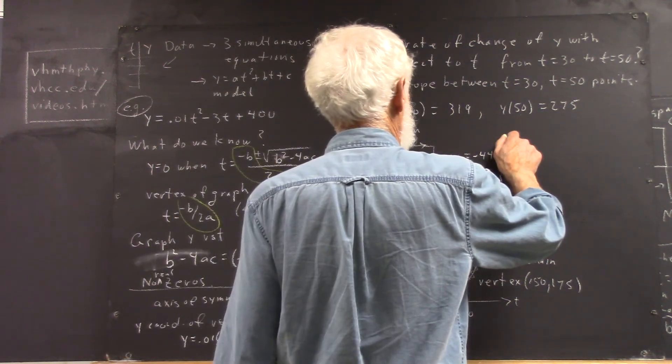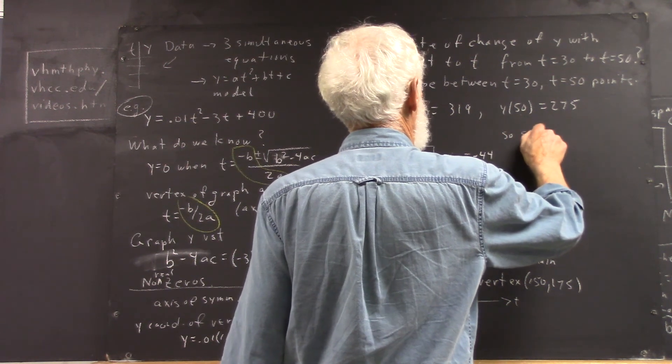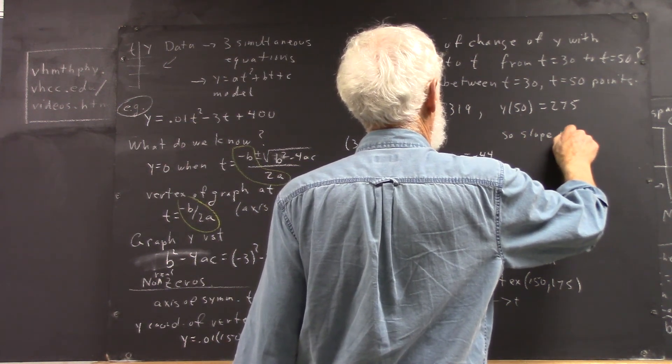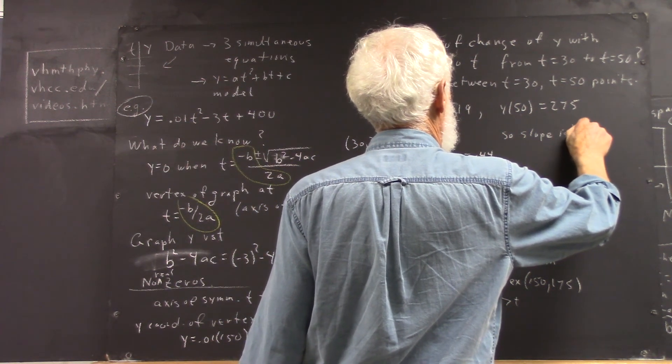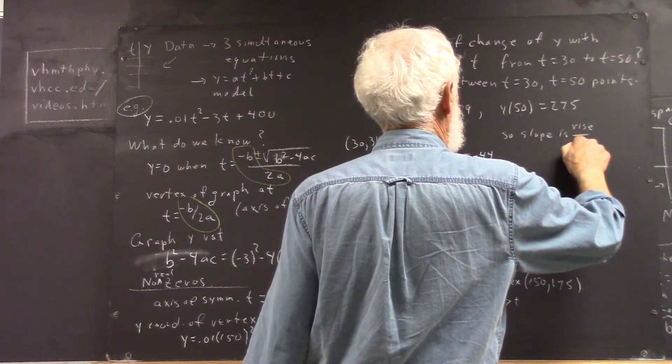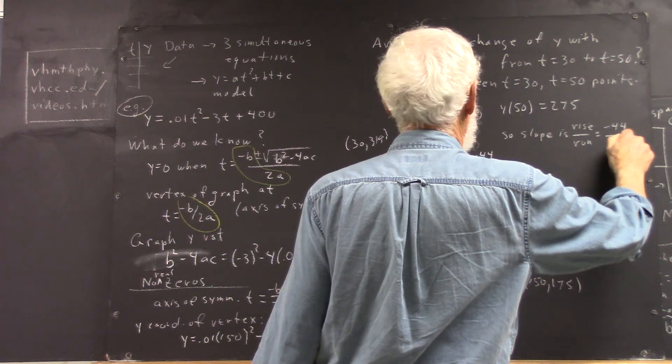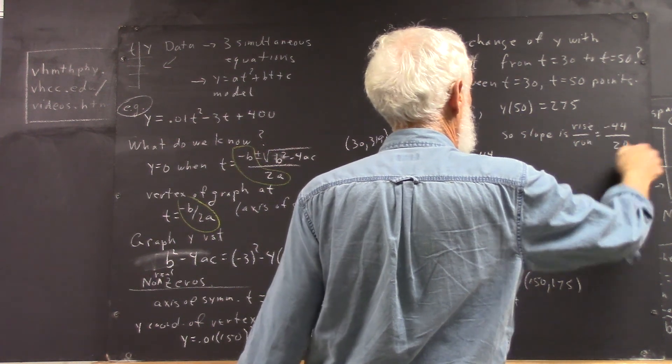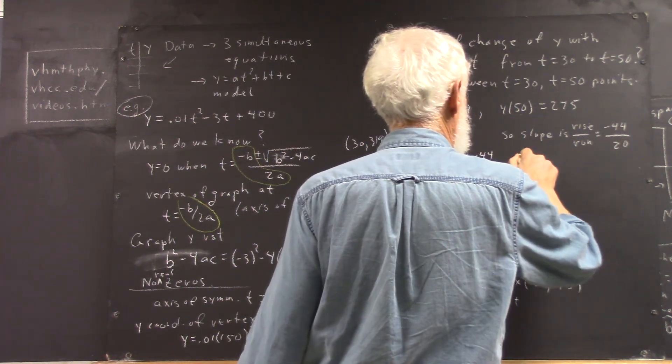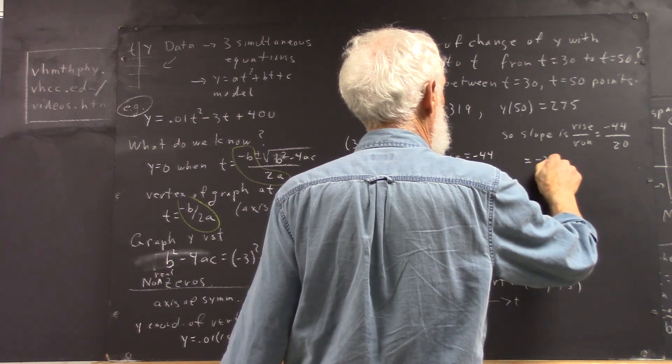So the slope is negative 44 over 20, rise divided by run, equals negative 2.2.